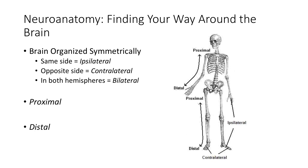A couple more terms: our brain has two hemispheres and is pretty symmetrical, so we have two of many structures — two hippocampi, two amygdala, two thalami. When something is on the same side, we call that ipsilateral, which literally means same side in Latin. When something is on the opposite side, it is contralateral. Whenever something is in both hemispheres, we call it bilateral.